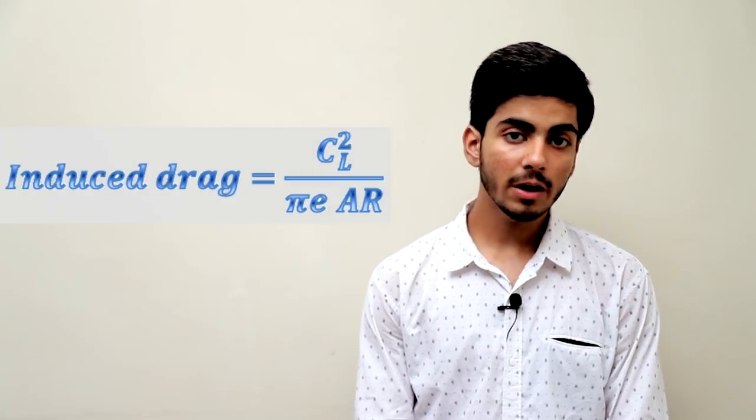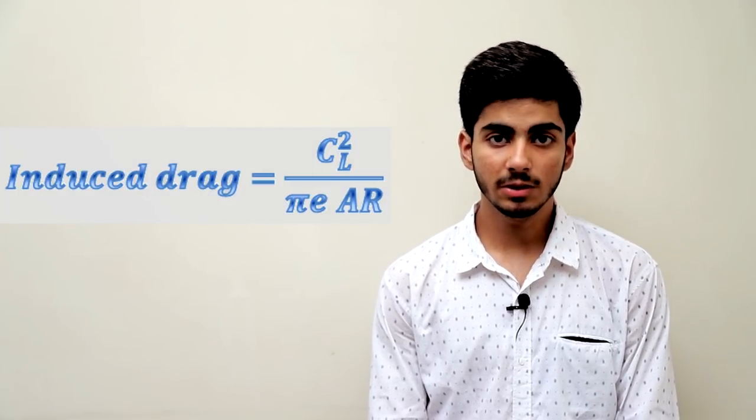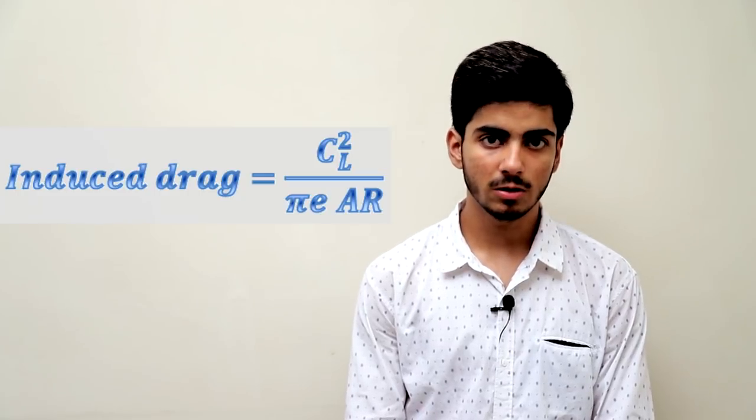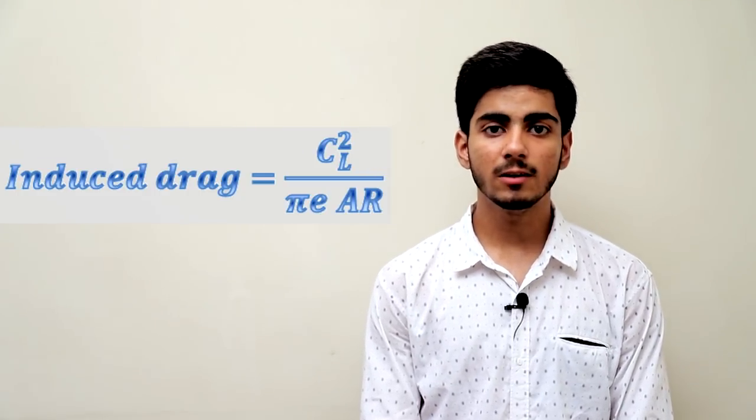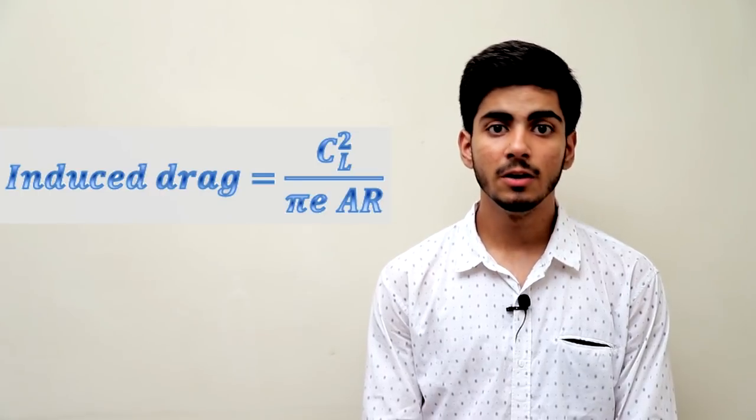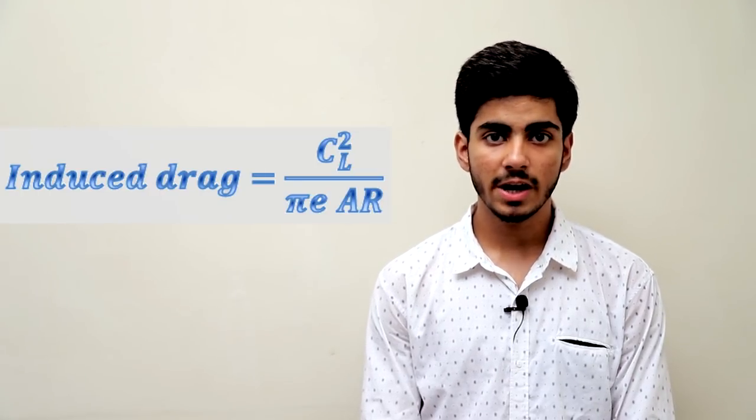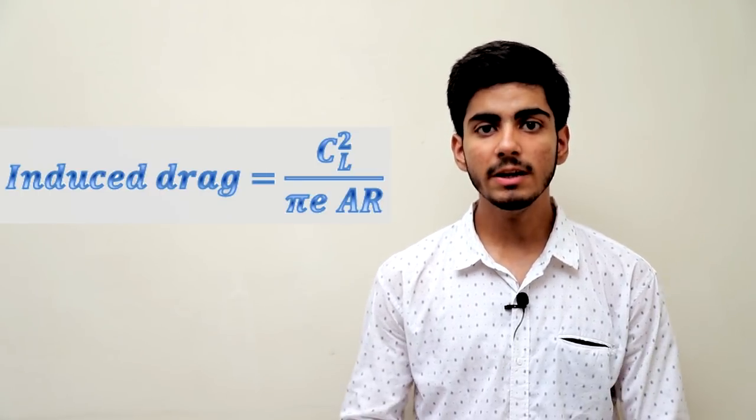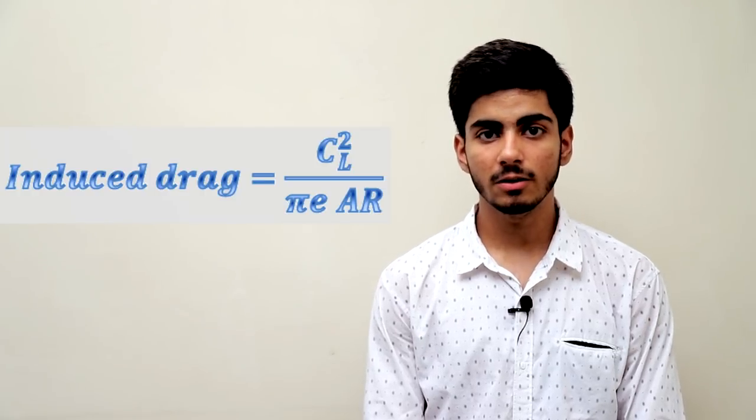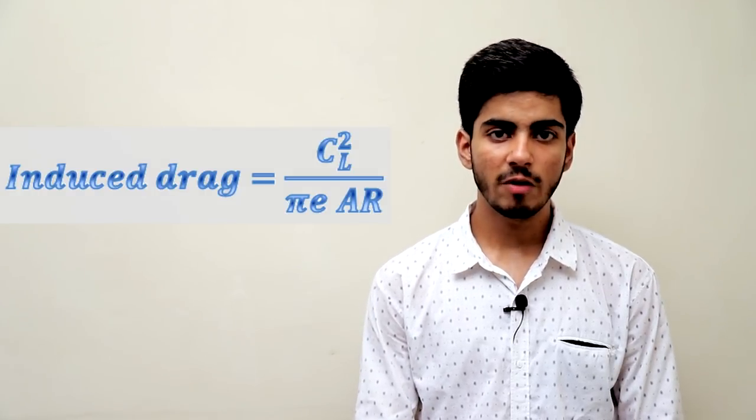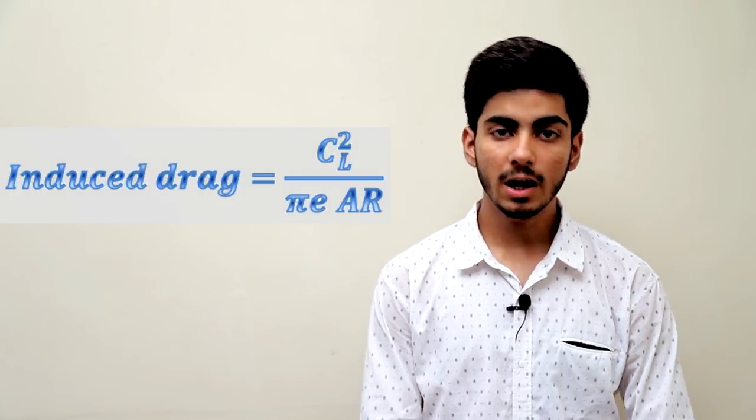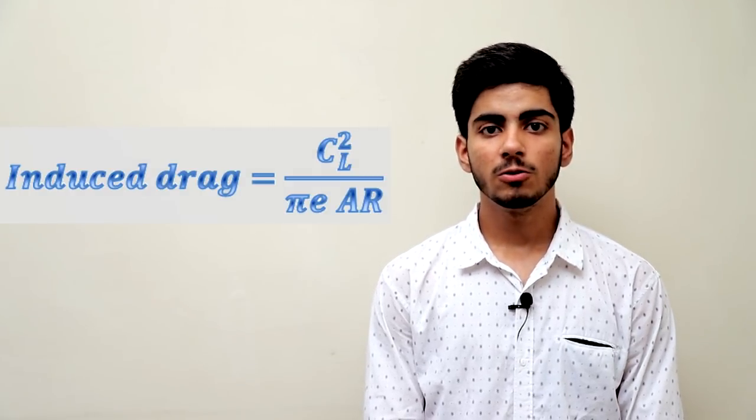However, when you increase the coefficient of lift, the square on top of that lift increases the induced drag a lot. Notice that pi is a constant and the span efficiency or e does not affect the induced drag a lot. So the only way left for the aircraft designer to reduce the induced drag and be able to fly at a higher altitude was to increase the aspect ratio.